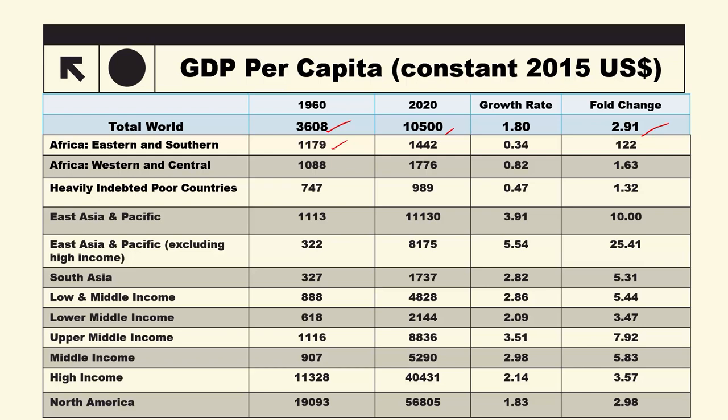For Africa's eastern and southern region, the growth rate was just 0.34%, compared to the world's growth rate of 1.8% — very marginal, with a multiplier of only 1.22. The western and central part of Africa performed slightly better at 0.82%, with per capita GDP increasing about 1.63 times.